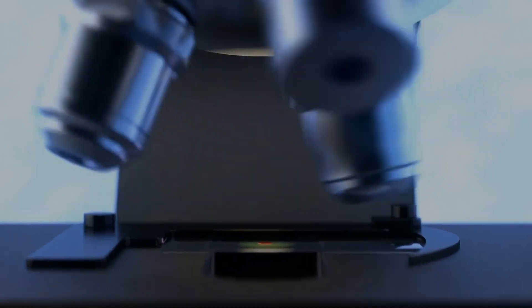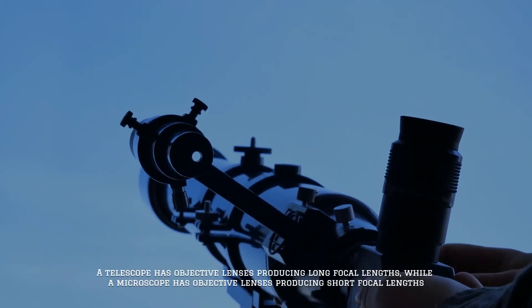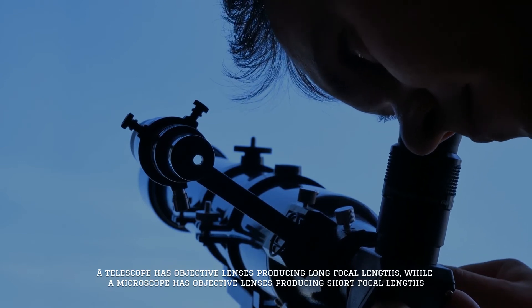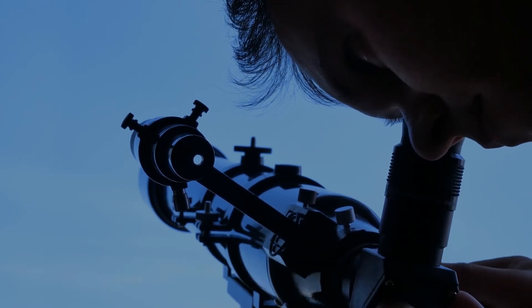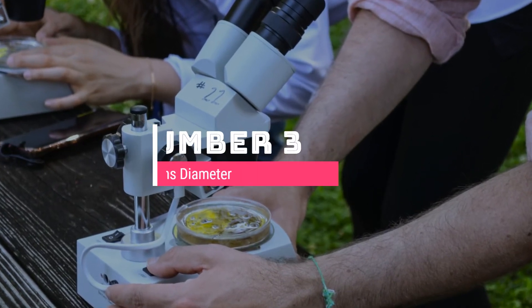A telescope has objective lenses producing long focal lengths while a microscope has objective lenses producing short focal lengths. Number three: lens diameter.